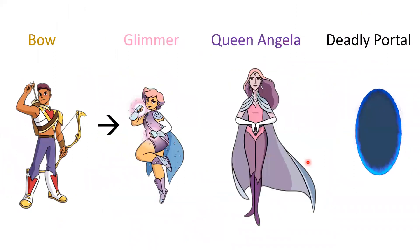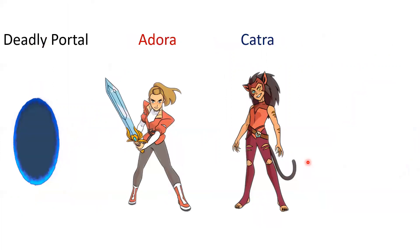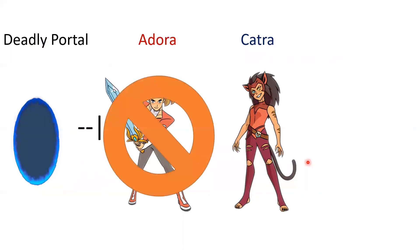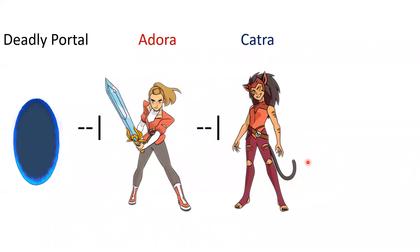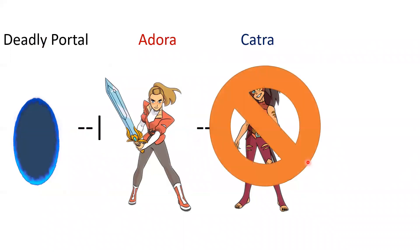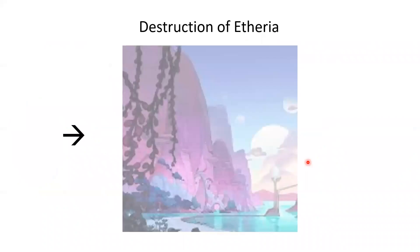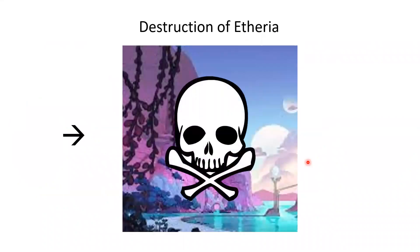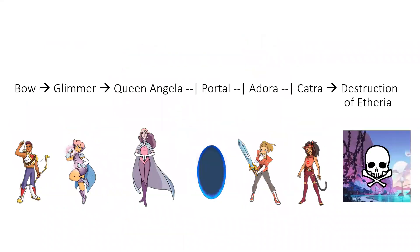The network goes: Bo activates Glimmer, who activates Queen Angela, who inhibits the portal, which inhibits Adora. She inhibits Catra, who activates the destruction of Etheria. So this is our full network.